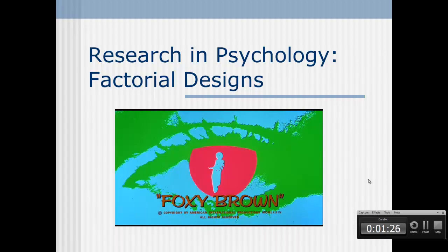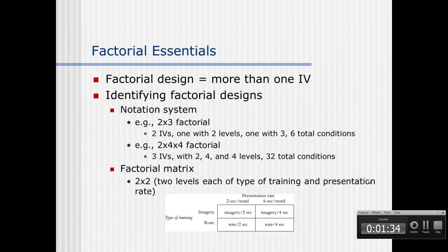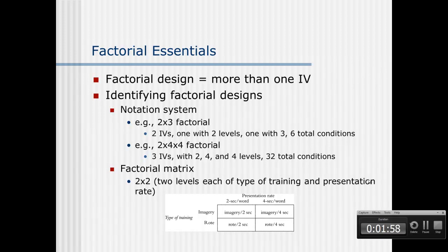Welcome to this mini lecture about factorial designs. Let's first talk about some factorial essentials. A factorial design means there's more than one independent variable. Now that we're dealing with more than one independent variable, we're calling these independent variables factors, so a factorial design means that we have several independent variables.